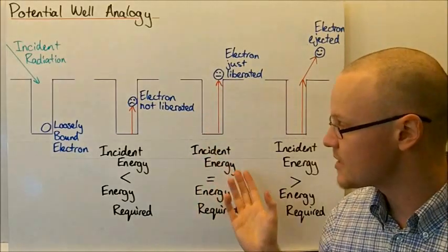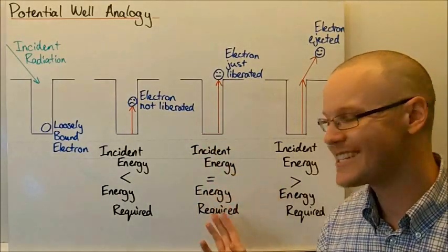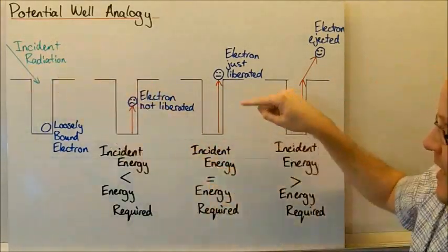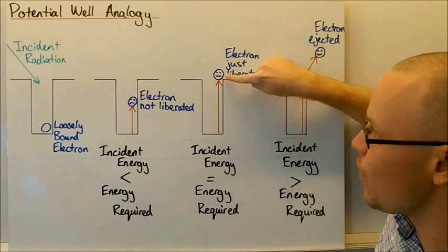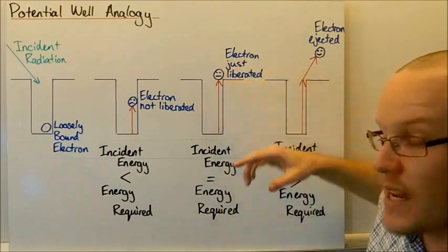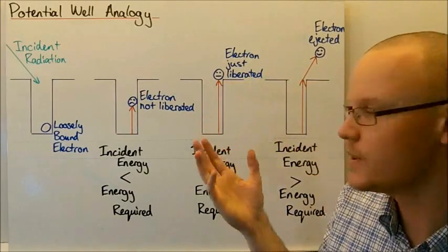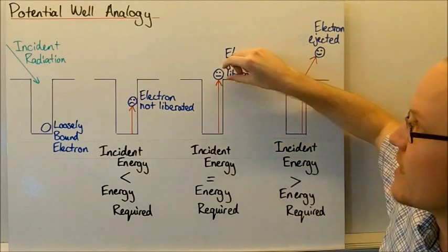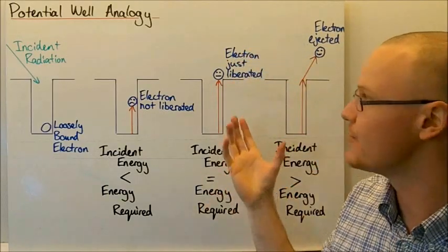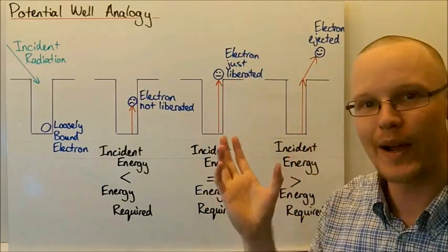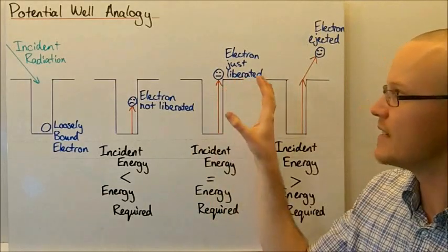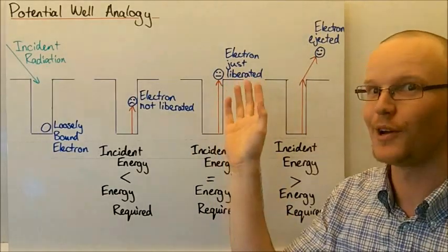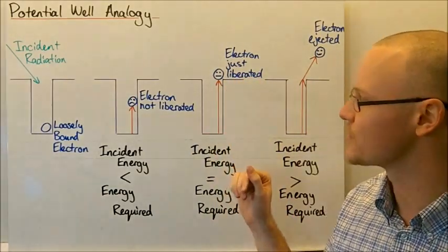If the incident energy is exactly the same as the energy required to lift it out of the potential well, then the electron will just become liberated. It will have no extra energy left over — it will just be floating near the metal surface.